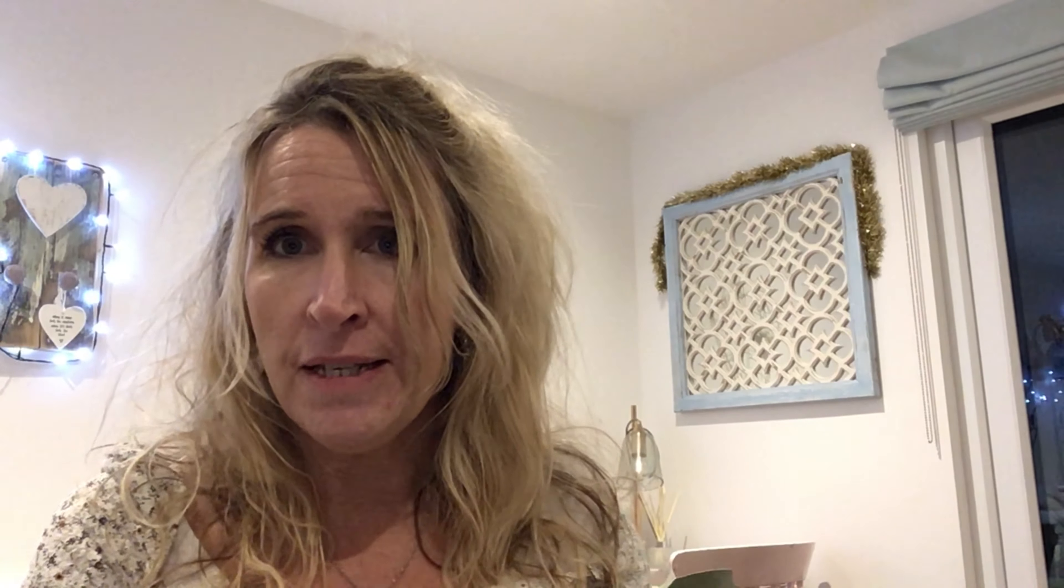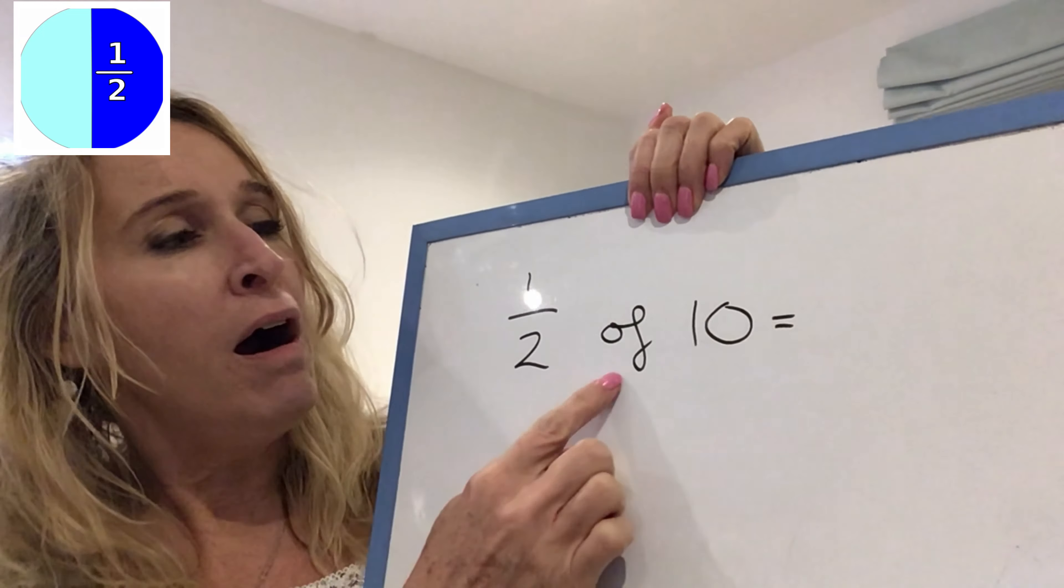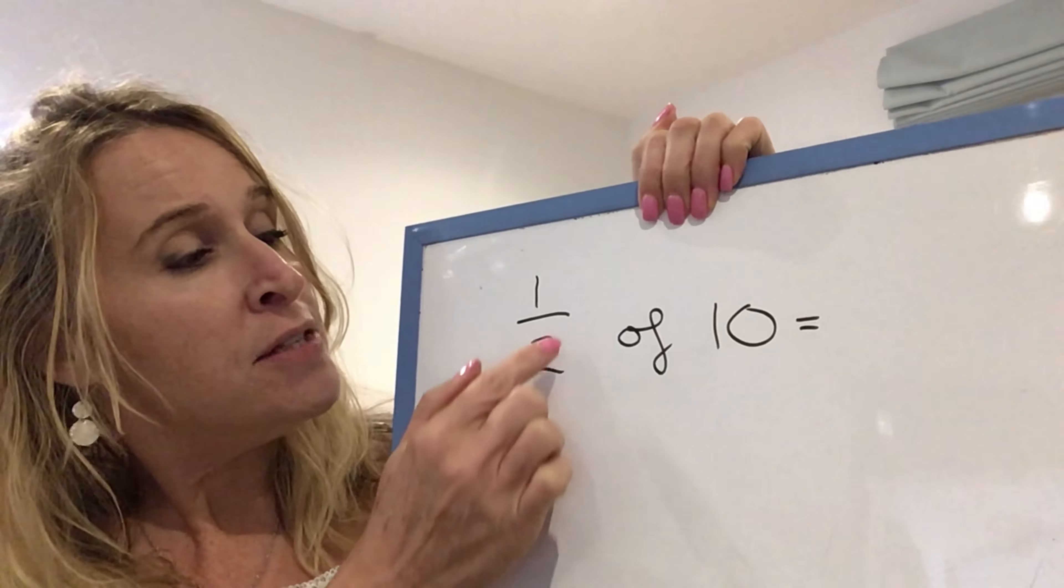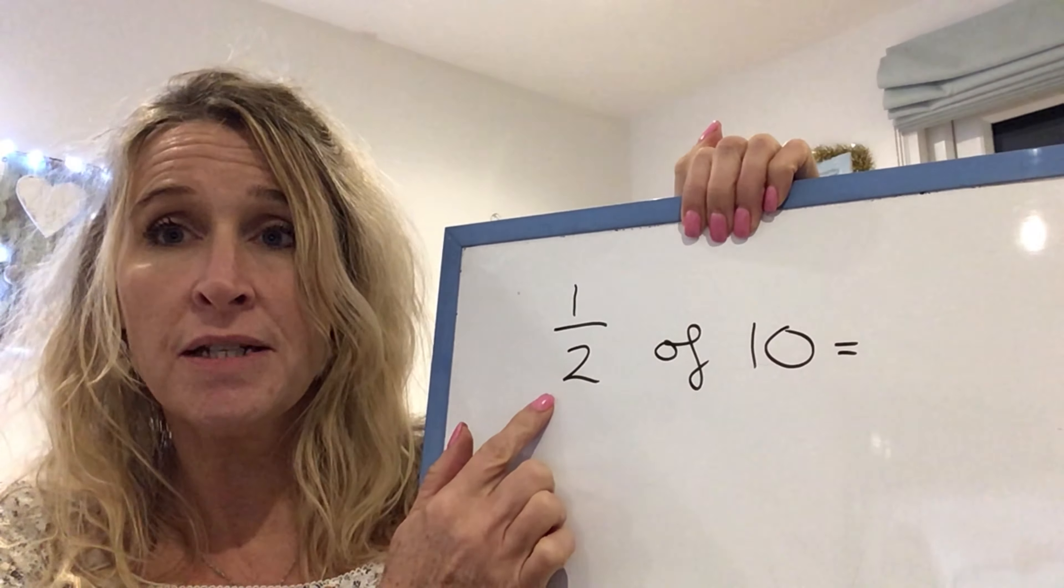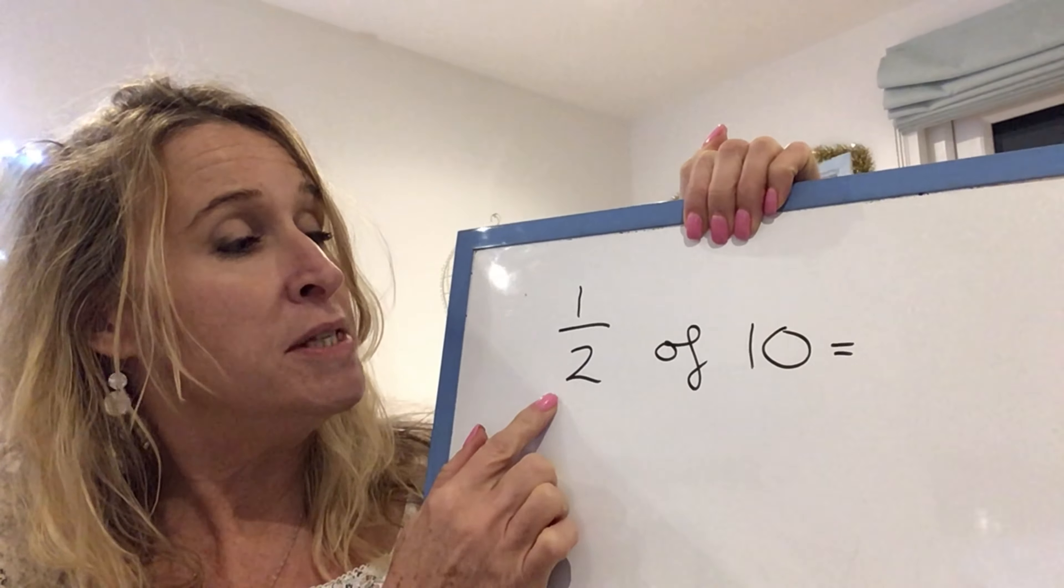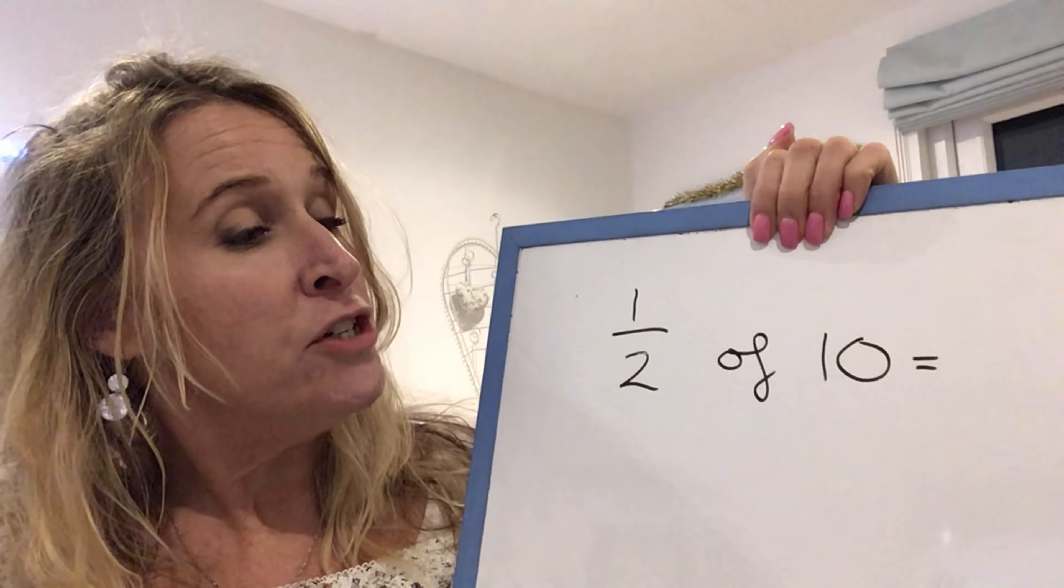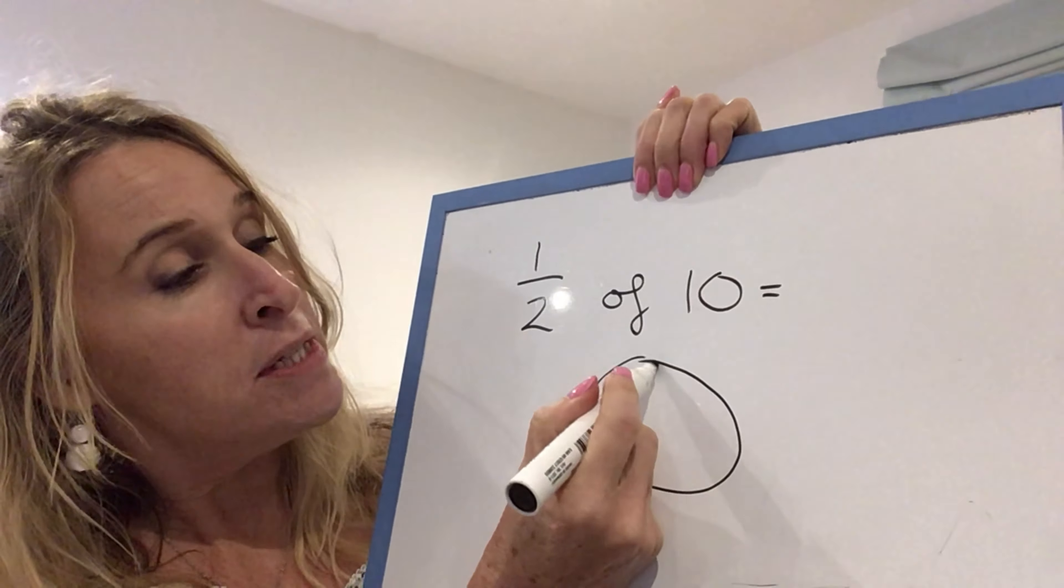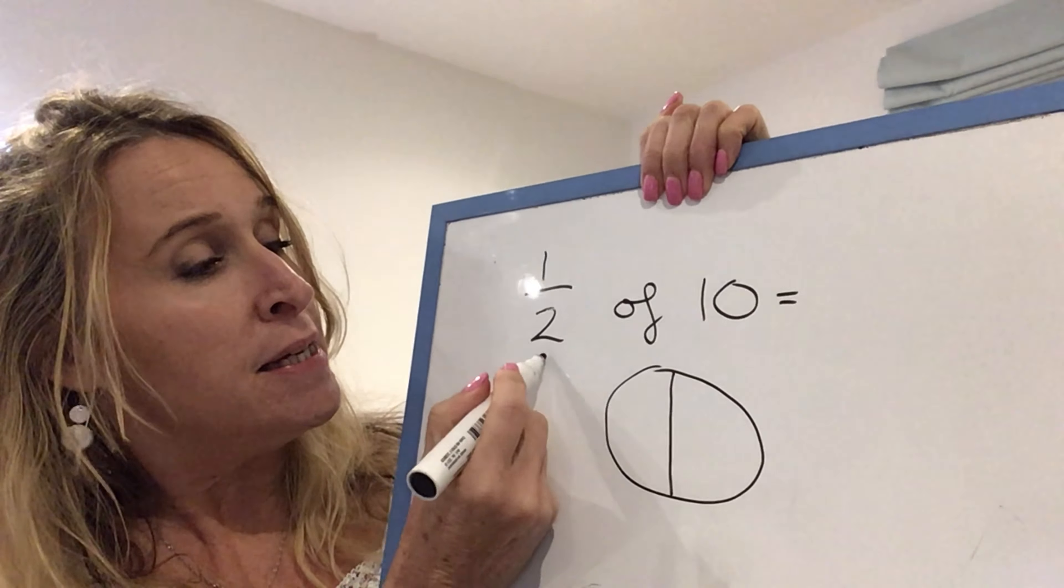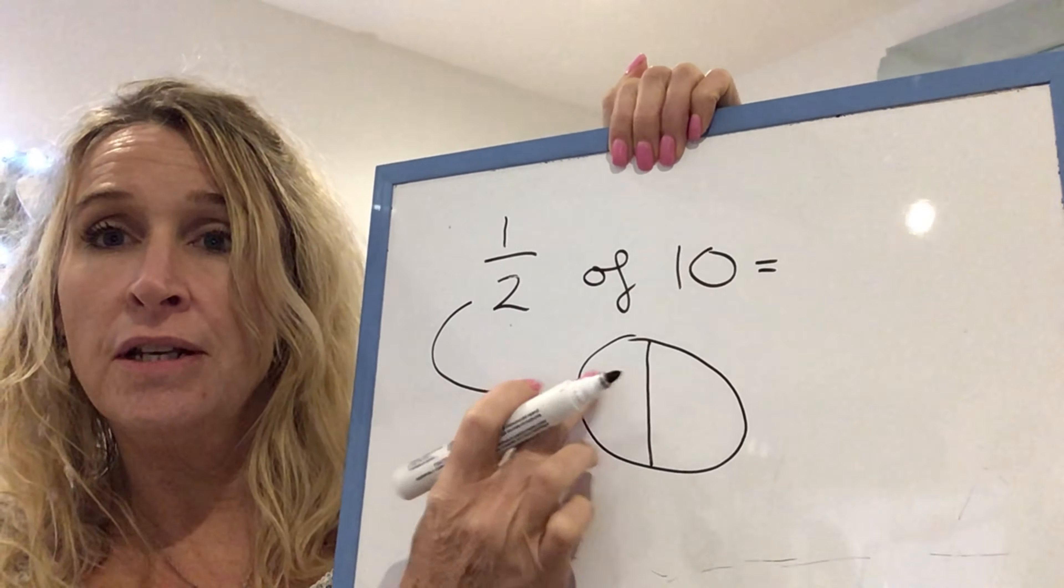So the way we teach it is to use our understanding of the fraction of shape. So if we take this one, a half of 10. Now on the last video I talked a lot about this bottom number. This bottom number, the denominator as they'll start to learn in year three onwards, is the number of pieces. So if I was to actually draw a shape, maybe a pizza, and I was to cut it into two pieces. That's all I've done. I've copied the fraction into a shape.